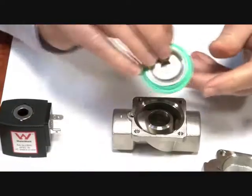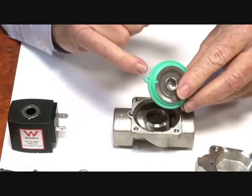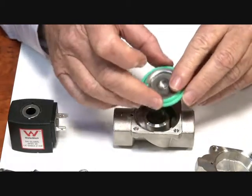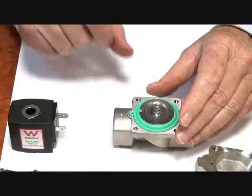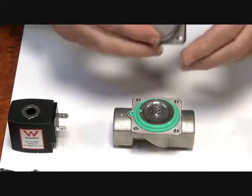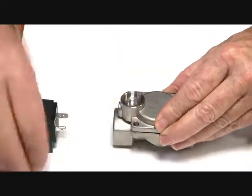For assembling the valve, that unit goes back in here. There's a little indicator on here which goes into this hole. And just in the reverse of what we've seen, the spring goes on top of there. This unit goes on here.